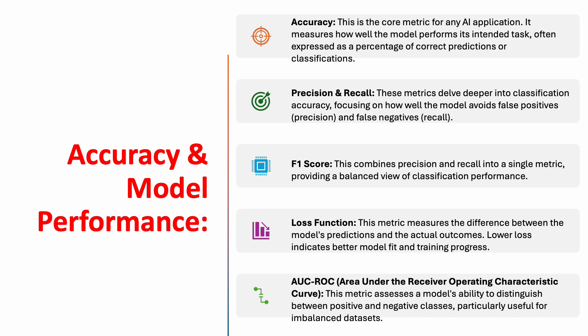Let's look at the first category: accuracy and model performance. Accuracy is a core metric of any AI application — it measures how well the model performs its intended task, often expressed as a percentage of correct predictions or classifications. Precision and recall dive deeper into classification accuracy, focusing on how well the model avoids false positives and false negatives respectively. F1 score combines precision and recall into a single metric, providing a balanced view of classification performance. Loss function measures the difference between the model's predictions and actual outcomes — lower loss indicates better model fit and training progress.